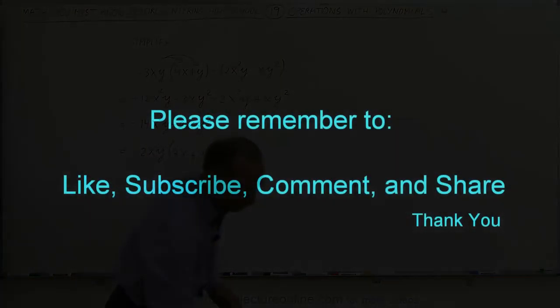Now it's customary to factor out anything that's common. Notice we can factor out a negative 2, we can factor out a single x, and we can factor out a single y. So this can now be written as follows. This is equal to minus 2xy times the quantity.